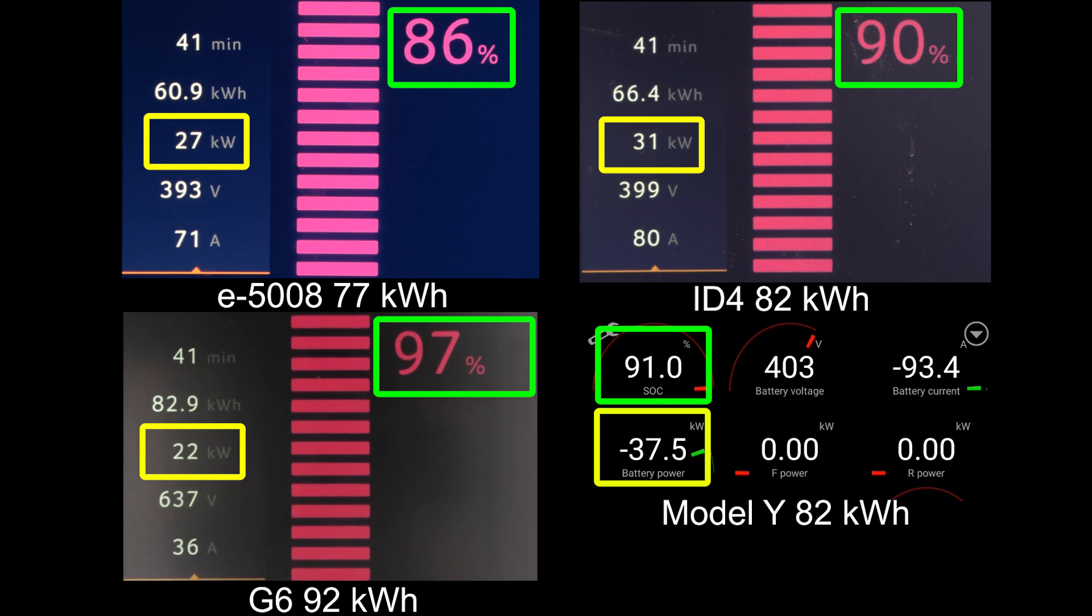And now we're just waiting for the slowest car, which is the Peugeot to hit 90 percent. So the question is, will the G6 hit 100 percent? Well, the G6 is already at 98 but taking only 22 kilowatt. Look at the speed here. G6 takes 23 kilowatt at 98 percent. And then the Peugeot takes 25 kilowatt at 88 percent. Wow. I mean, okay, it's a bigger battery, the G6, but it seems like the battery design on the G6 is way better than these cars.